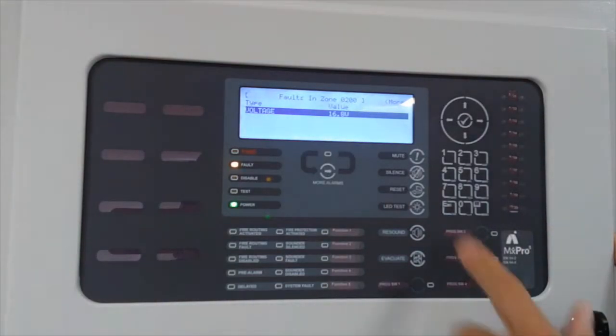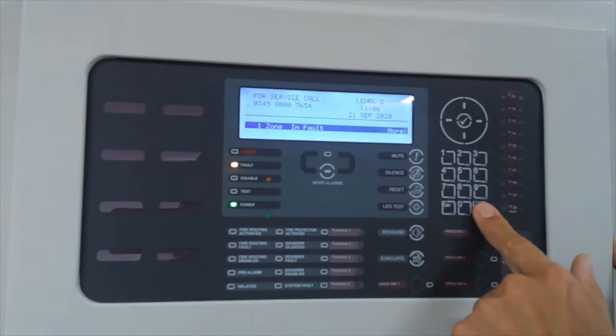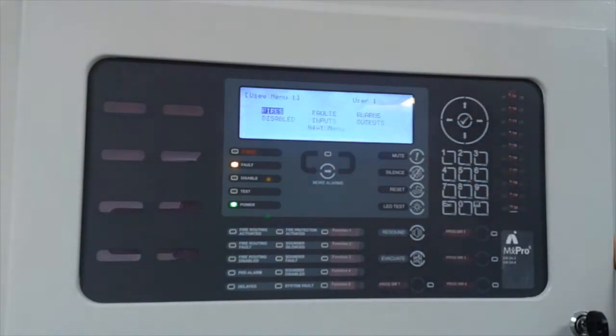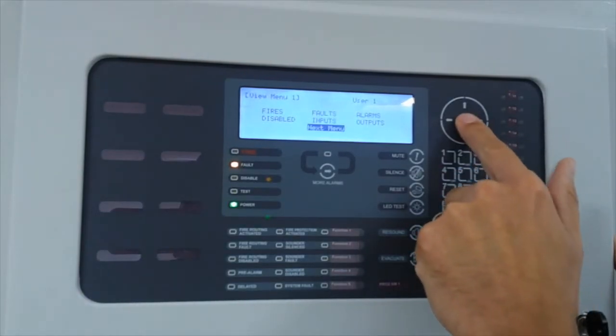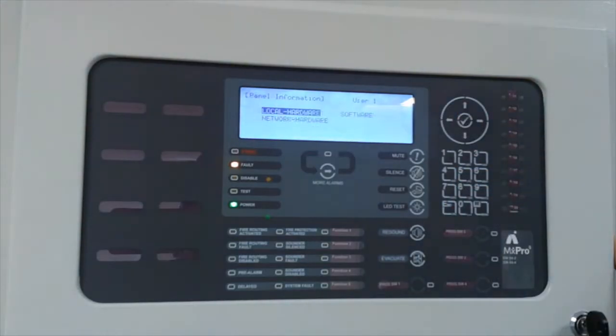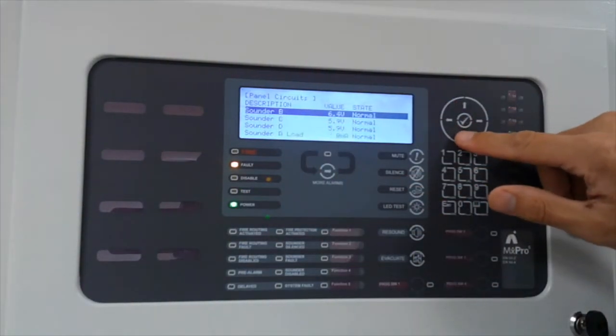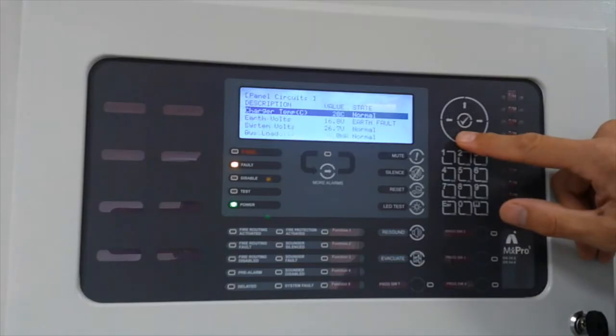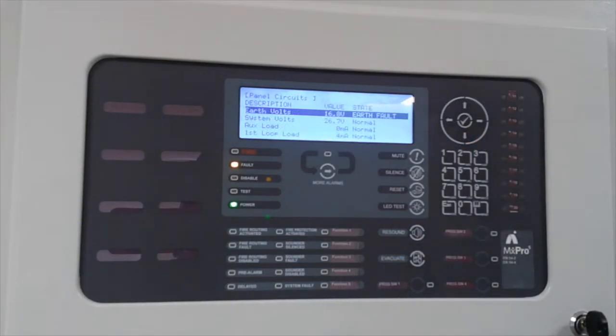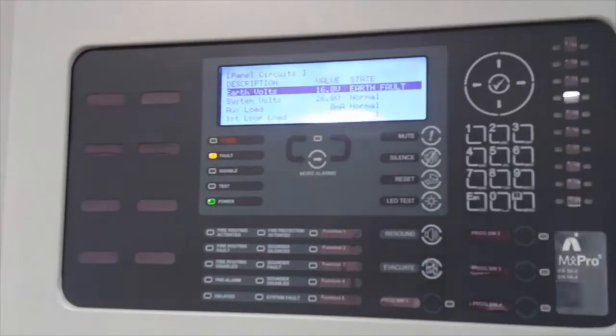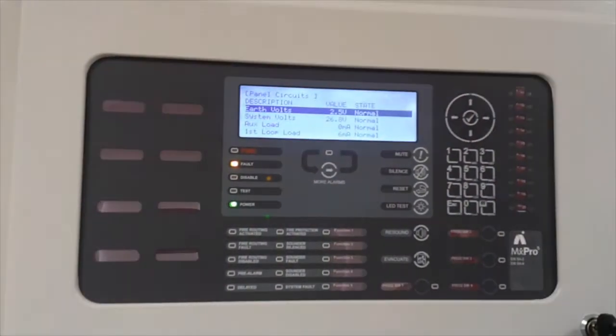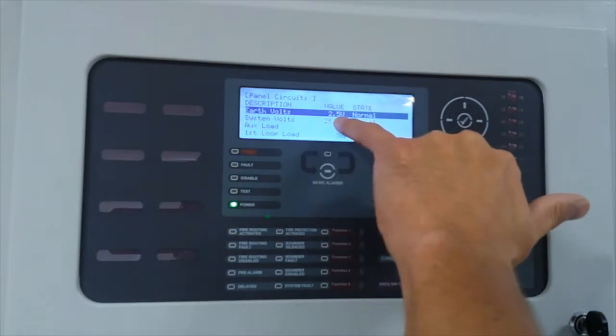So what do we do? We know we've got an earth fault on the system. Press your menu button, select the view option, scroll and find your panel menu. The panel is built with its own multimeter. We can see our sounder circuits in normal operation, scroll down to battery circuit charging voltage, temperature, and we've got an earth fault: 16.8 volts. This is a positive conductor to ground. The normal reading is 2.5 volts.